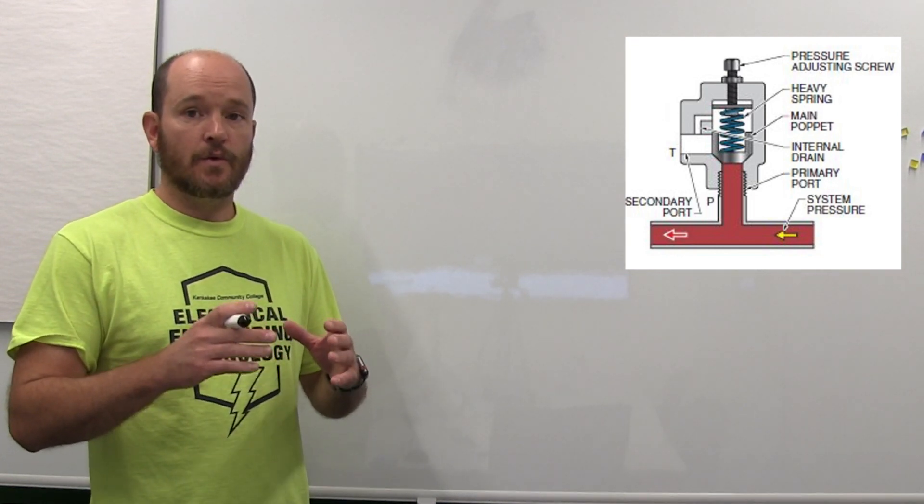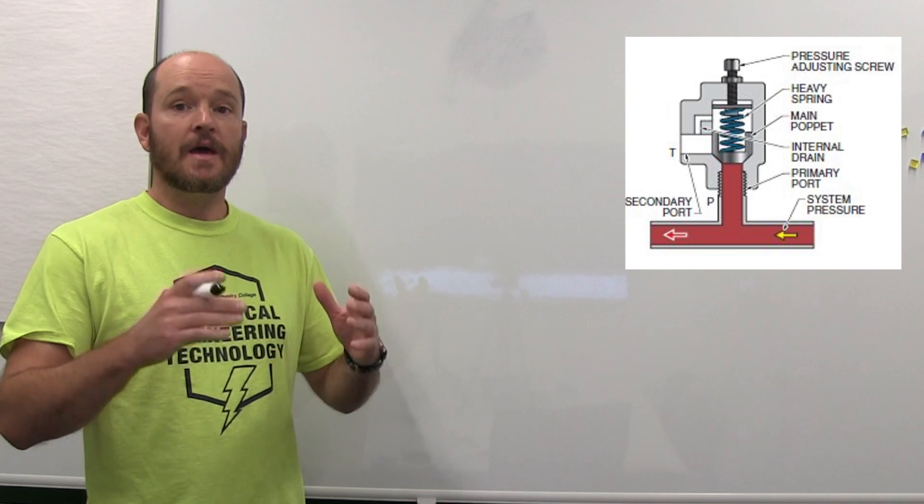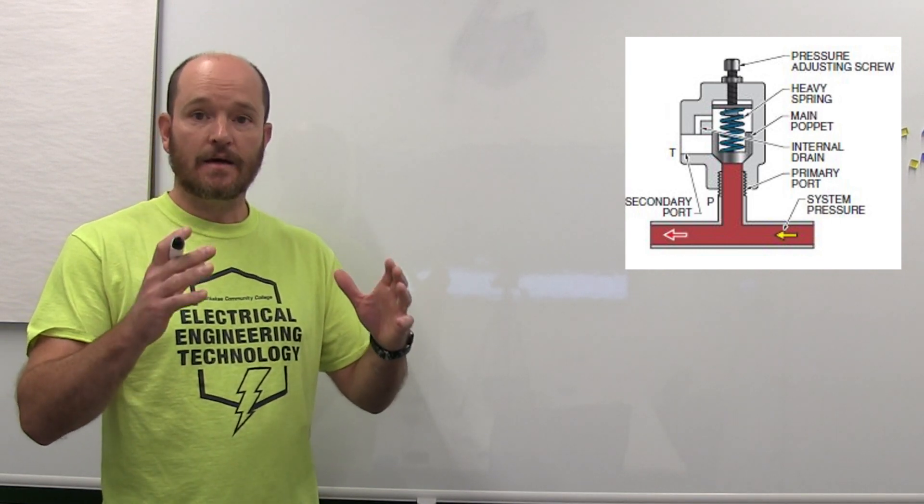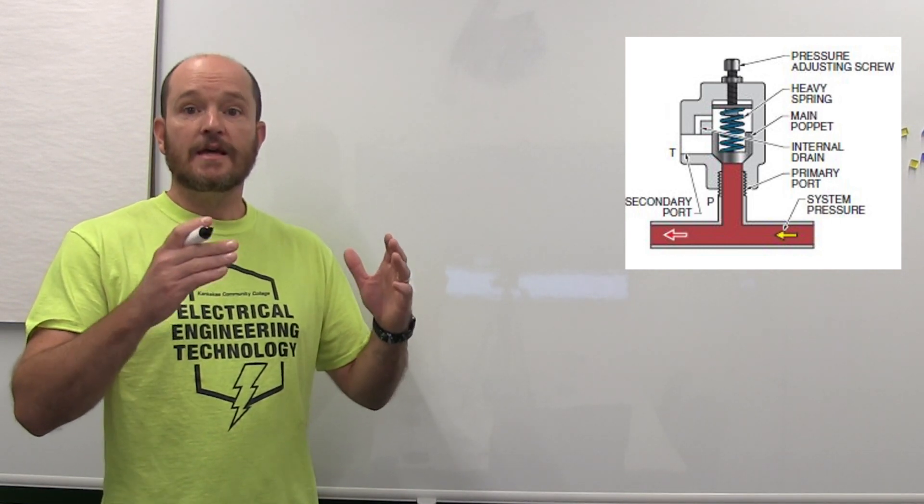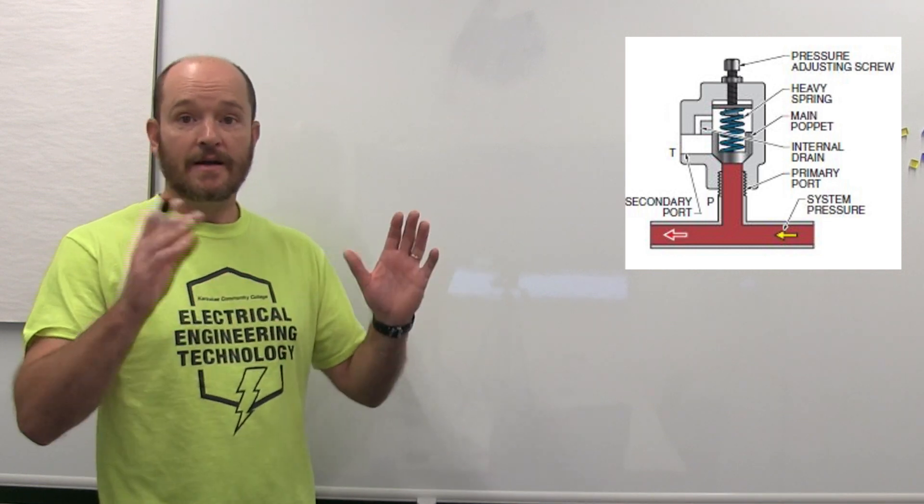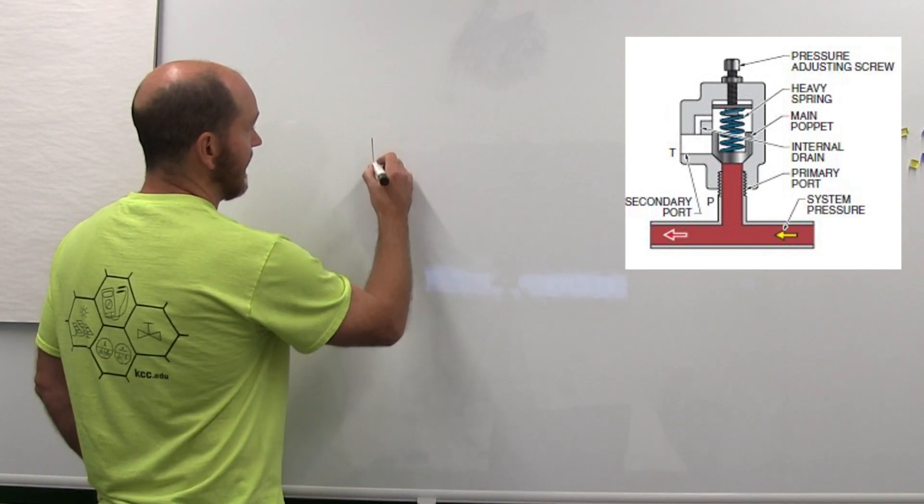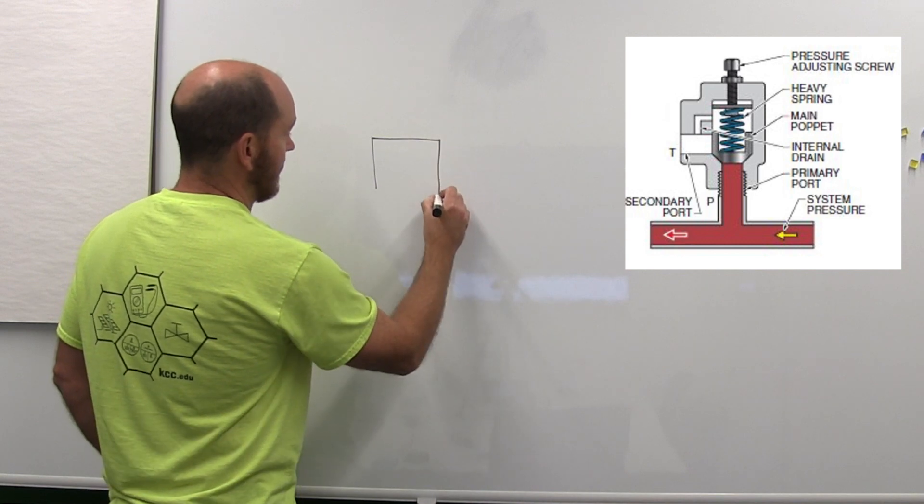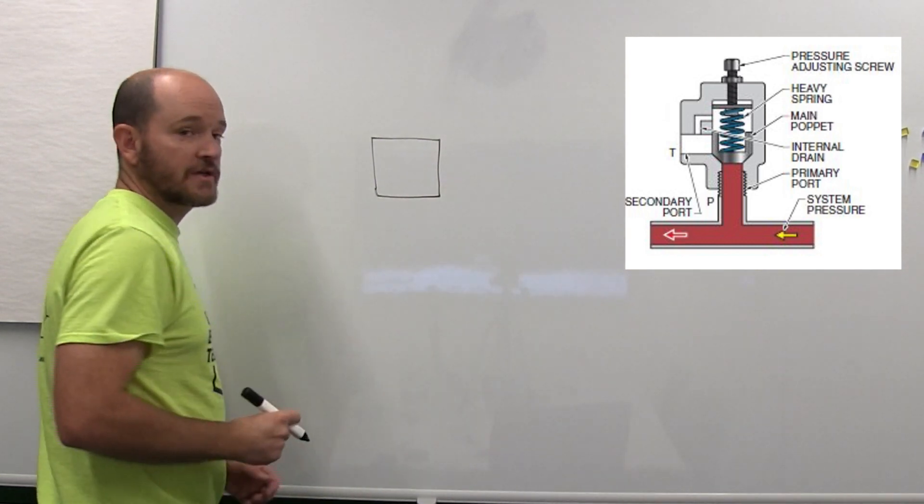The first thing we need to do when we're looking at the schematic diagram is understand how the body of the pressure relief valve is shown. This is one of the easiest parts because the schematic diagram for the body is just a square.